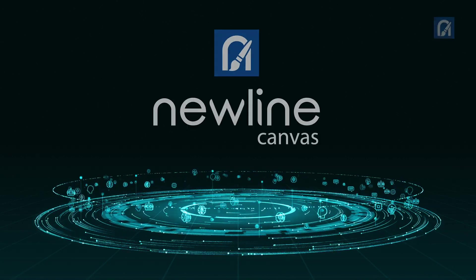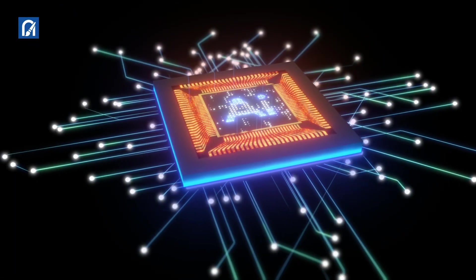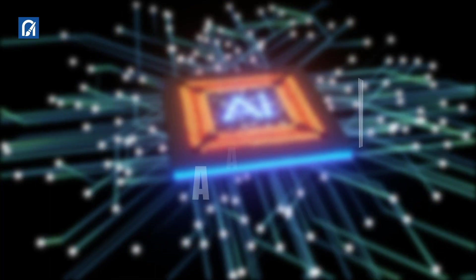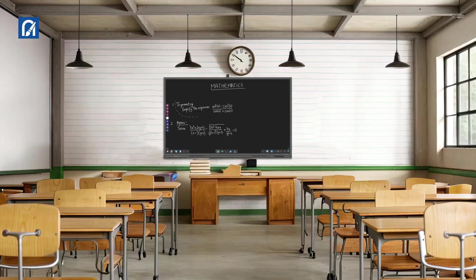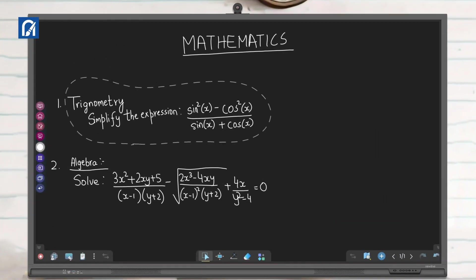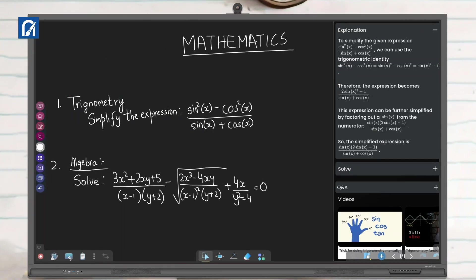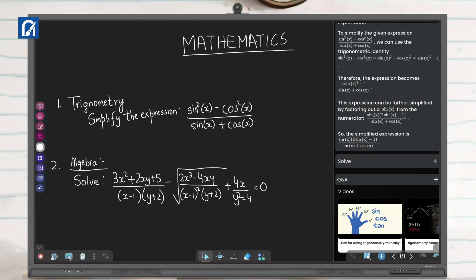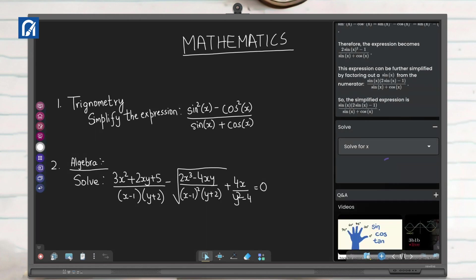Unleash your creativity with NuLine Canvas, India's first Gen AI-based whiteboarding and annotation software. From math equations to scientific diagrams, NuLine Canvas utilizes AI to recognize and enhance your content.